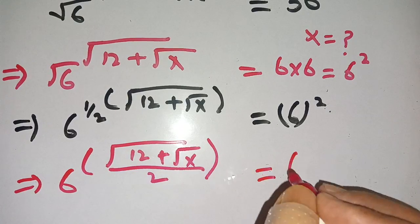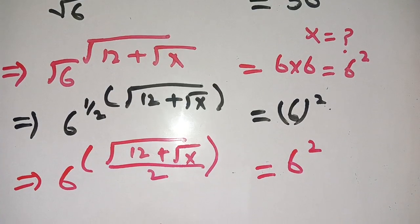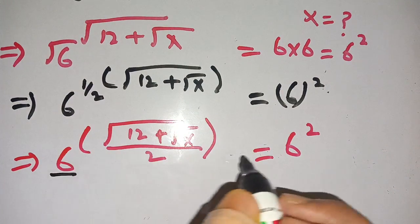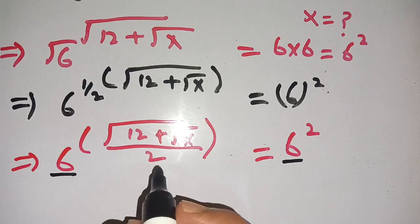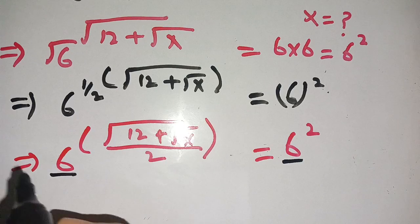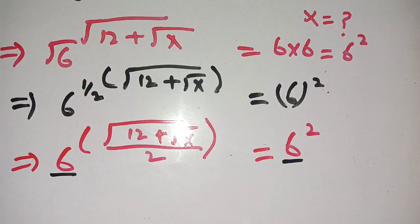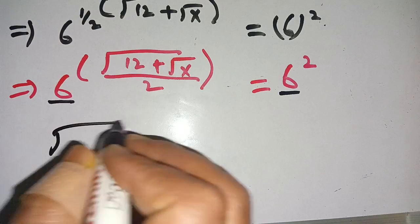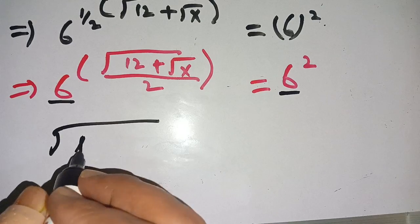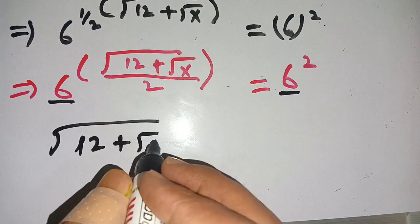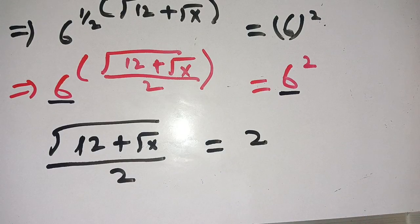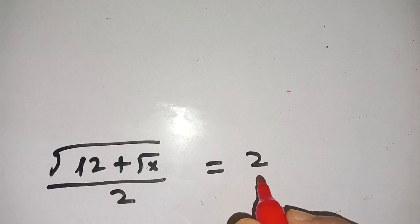The base on both sides is 6, so we can compare the exponents. On comparing the powers we get: square root of 12 plus square root of x, divided by 2, is equal to 2.